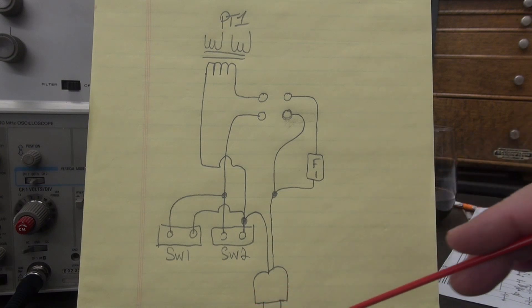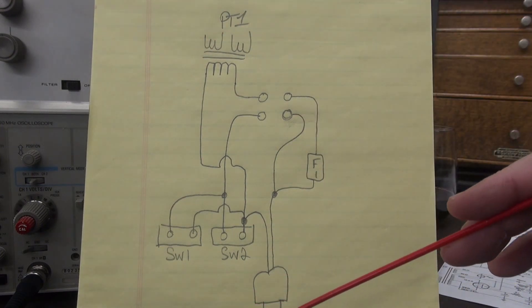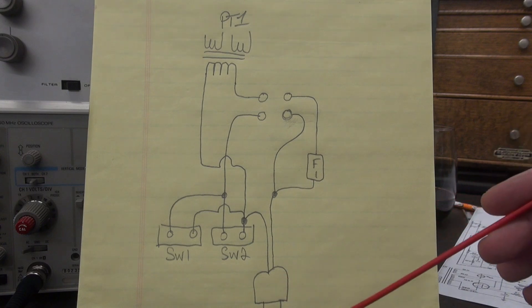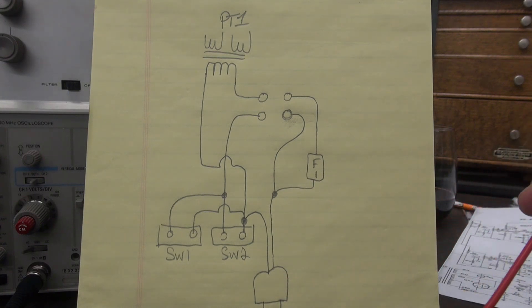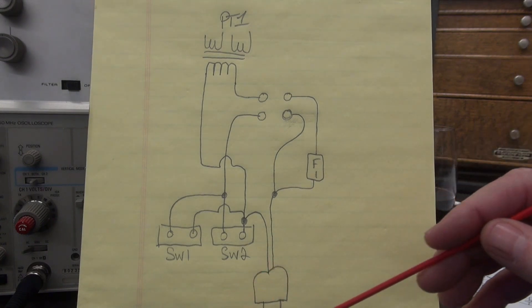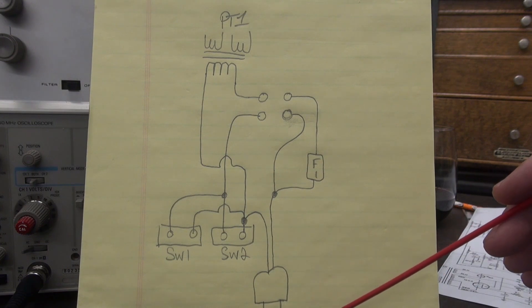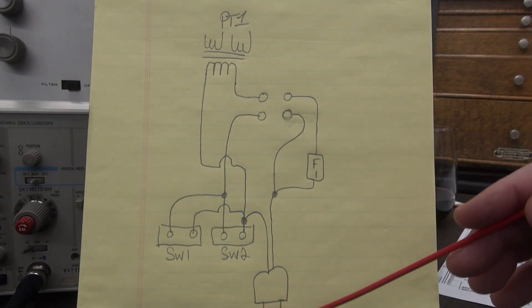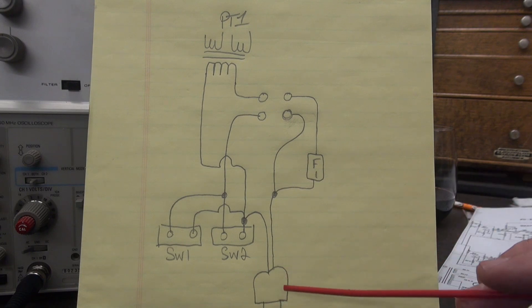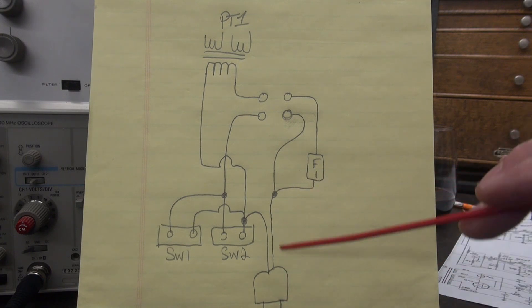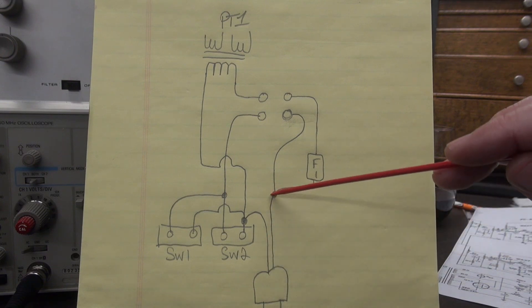All right. So this is what I came up with for the AC input to the PAS preamp. So here is the plug. And if you remember, this is a two spade, non-polarized plug. And there was a question about that. We'll get to that in a minute.